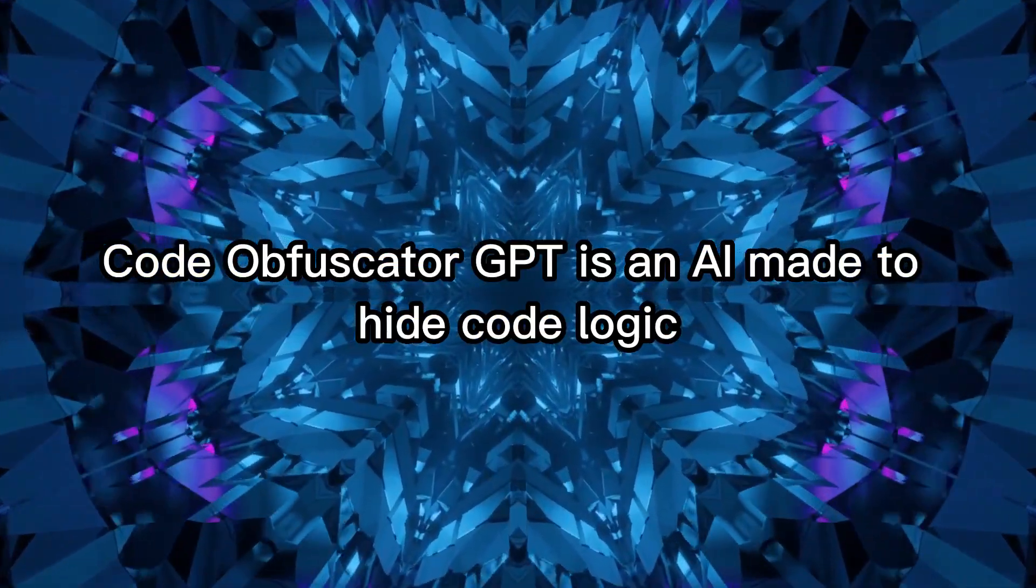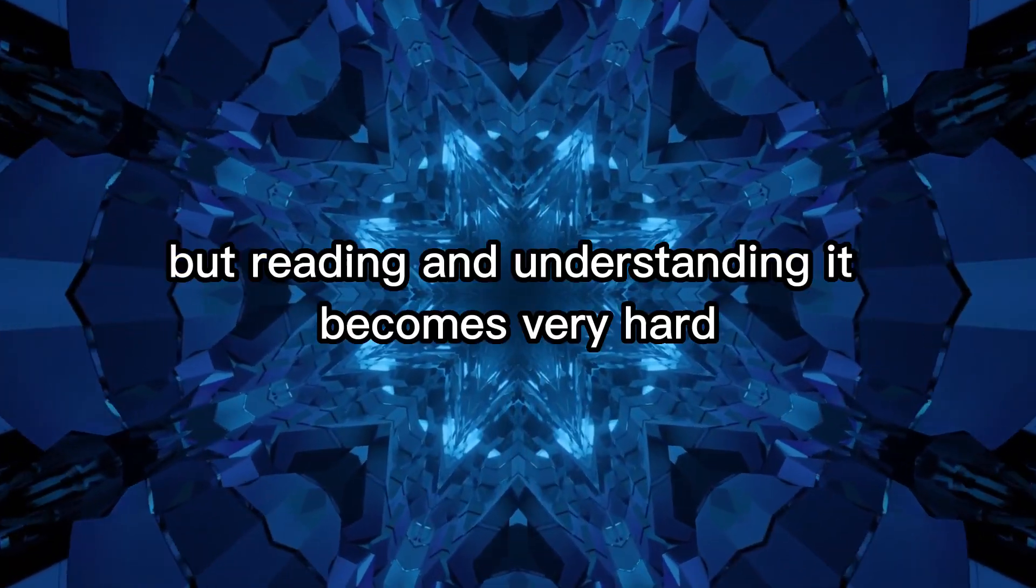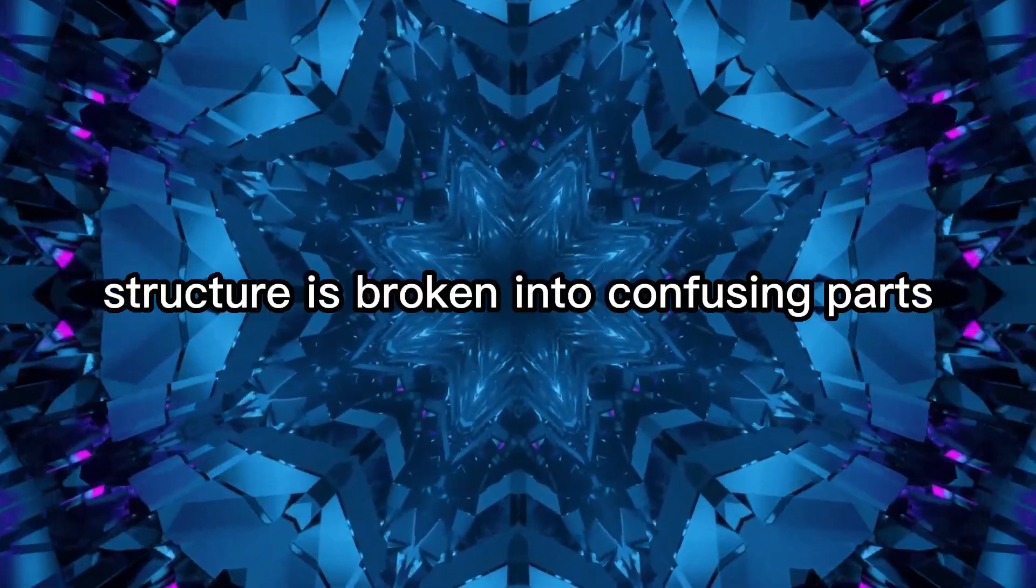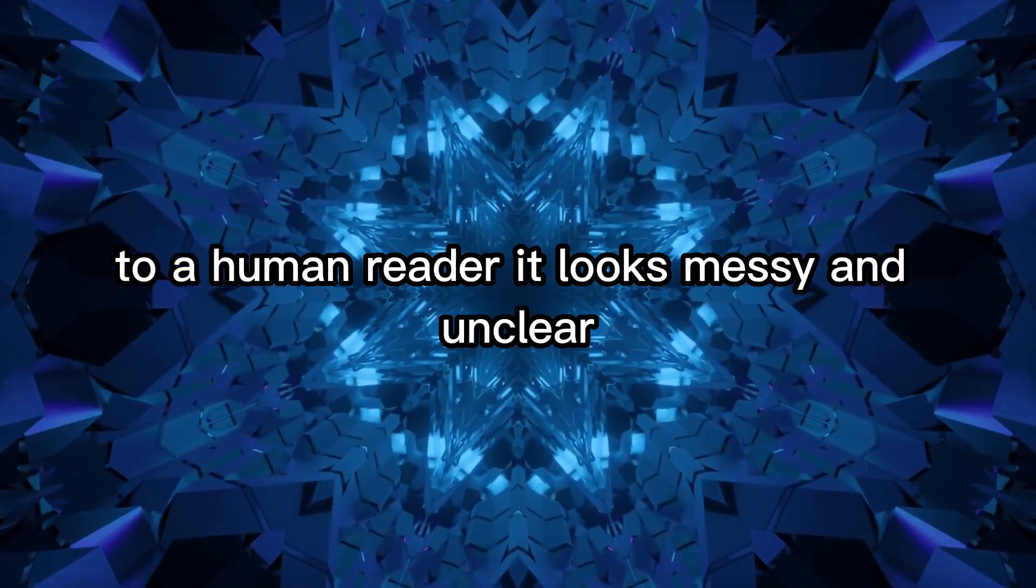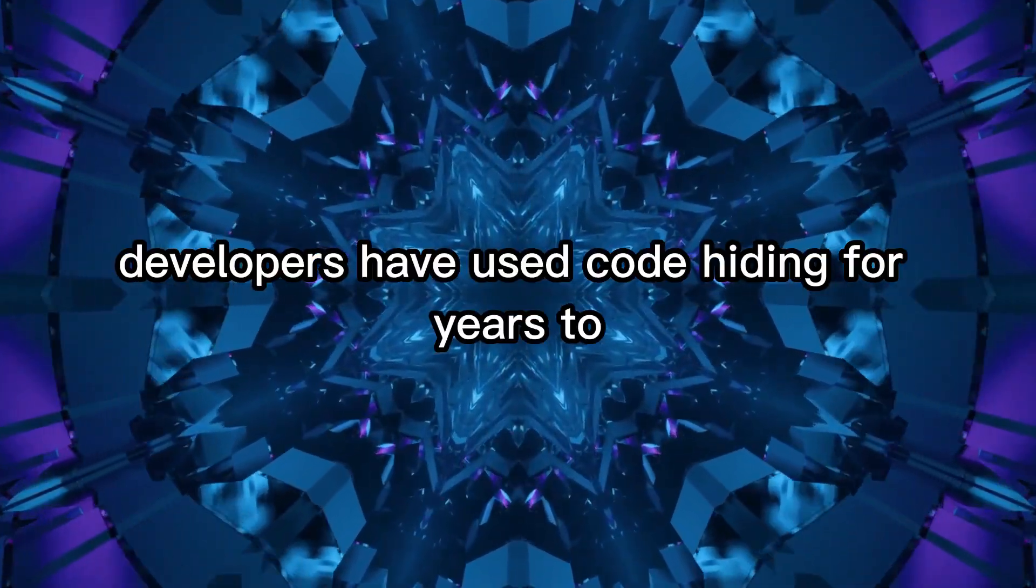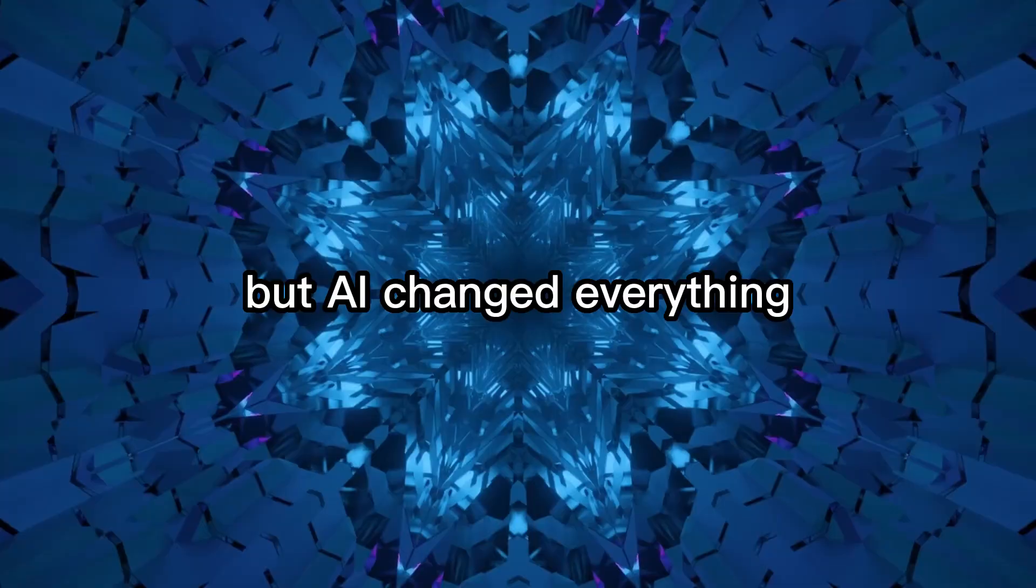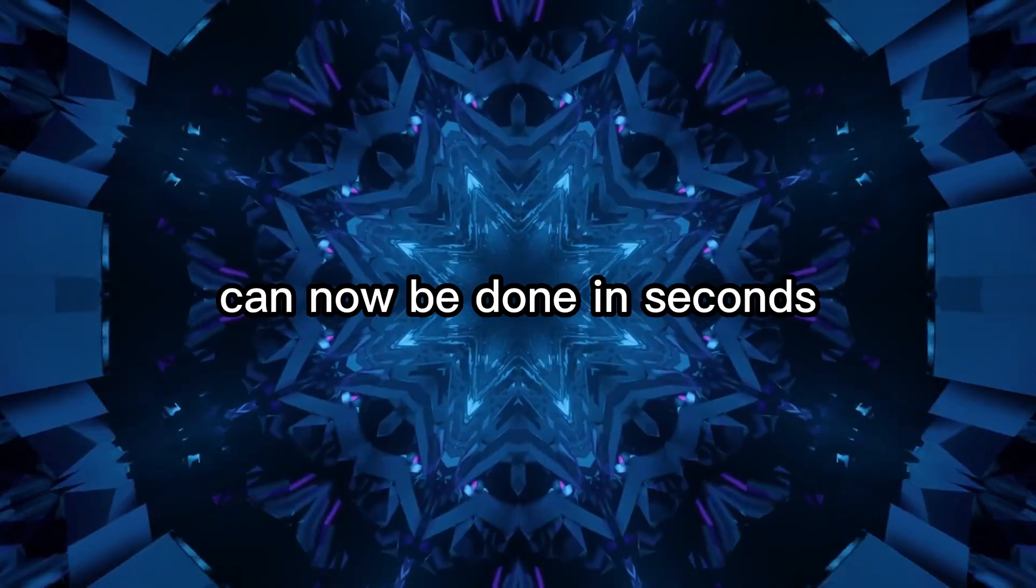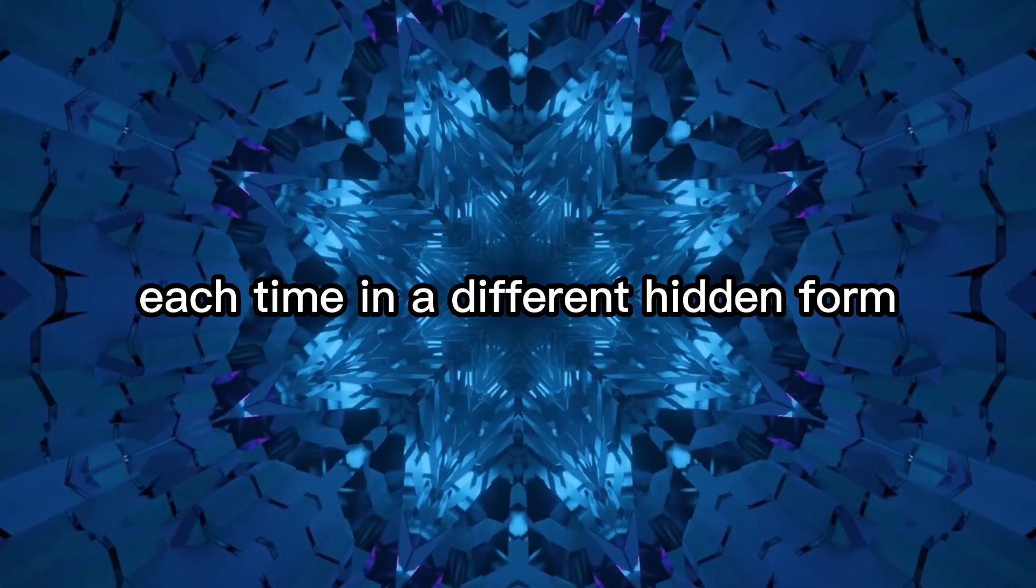Code Obfuscator GPT is an AI made to hide code logic. The program still works the same, but reading and understanding it becomes very hard. Names are changed. Structure is broken into confusing parts. Extra code is added that does nothing important. To a human reader, it looks messy and unclear. This idea is not new. Developers have used code hiding for years to protect their software from being copied or stolen. But AI changed everything. What once took hours of manual work can now be done in seconds. AI can rewrite the same code again and again, each time in a different hidden form.